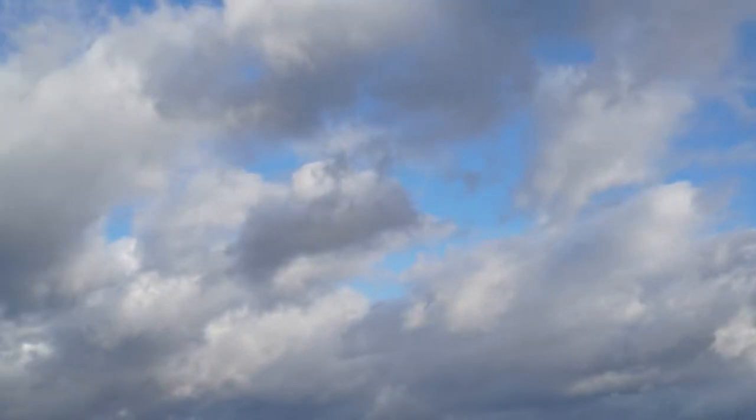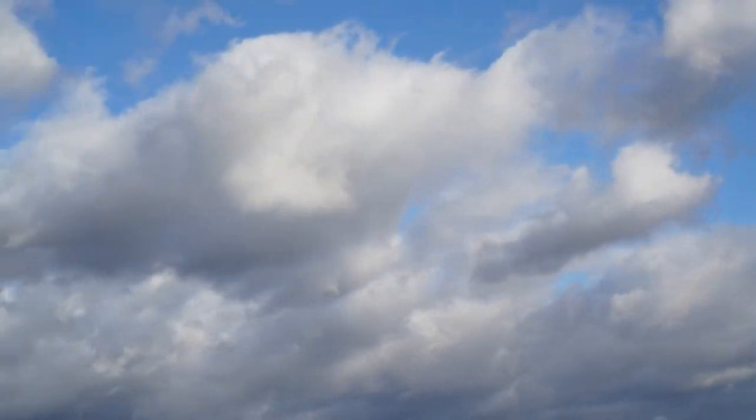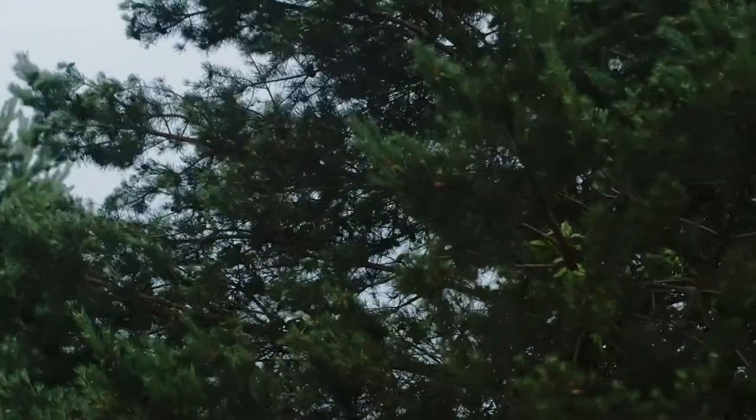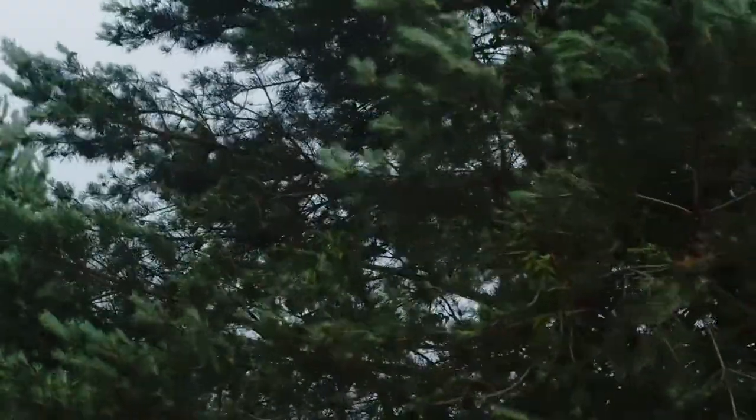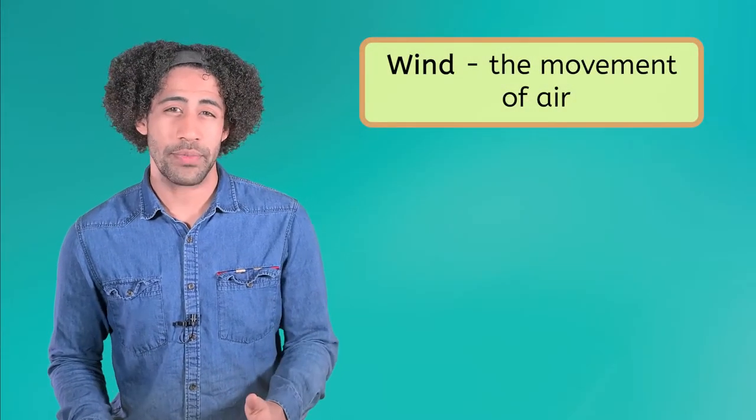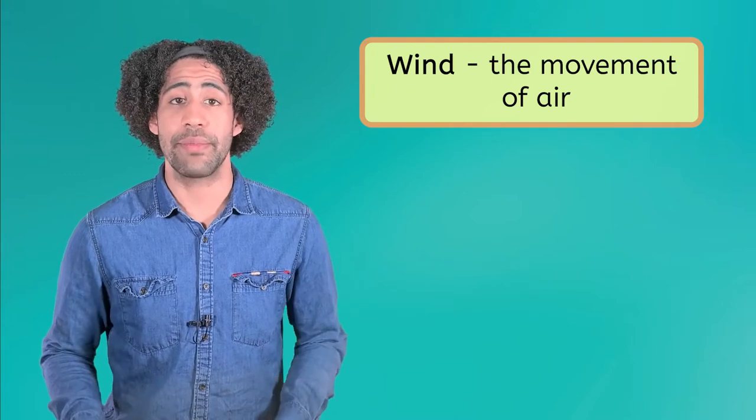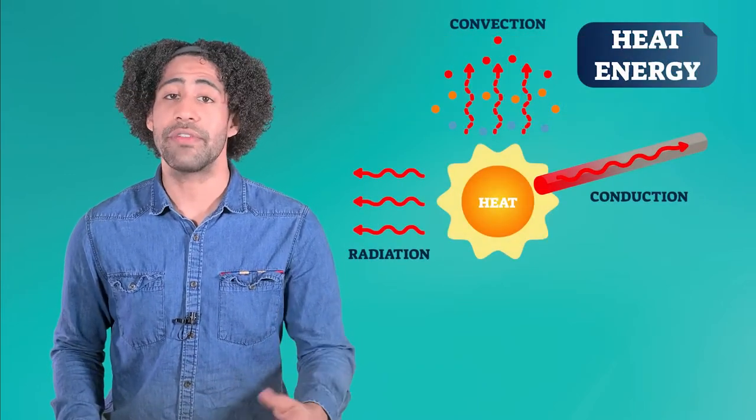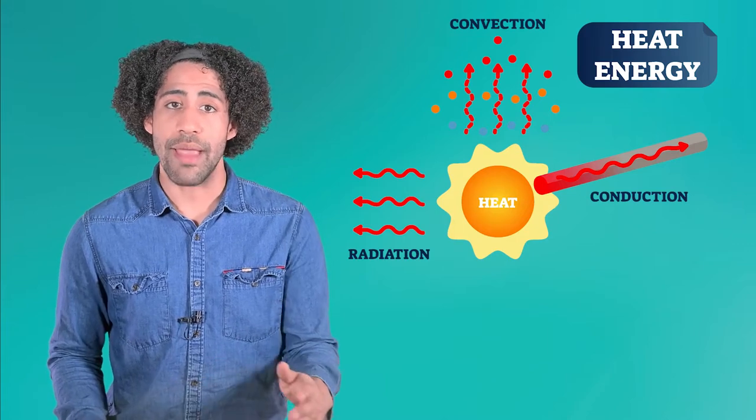The Earth's atmosphere is constantly moving. We see this movement when tree branches sway in the wind, and we feel it as a cool breeze. Every gust of wind is an effective movement in the atmosphere. But what is wind, and what causes it? Wind is the movement of air, and it's caused by the way heat transfers through the atmosphere. We learned in a previous lesson that heat is a type of energy, and it moves through the atmosphere through three main processes.